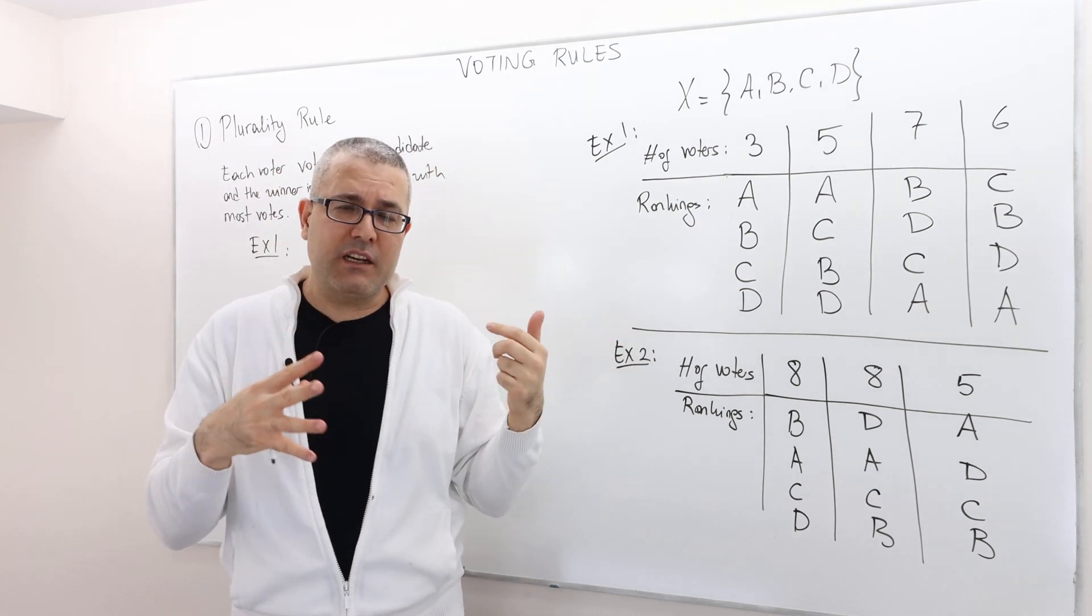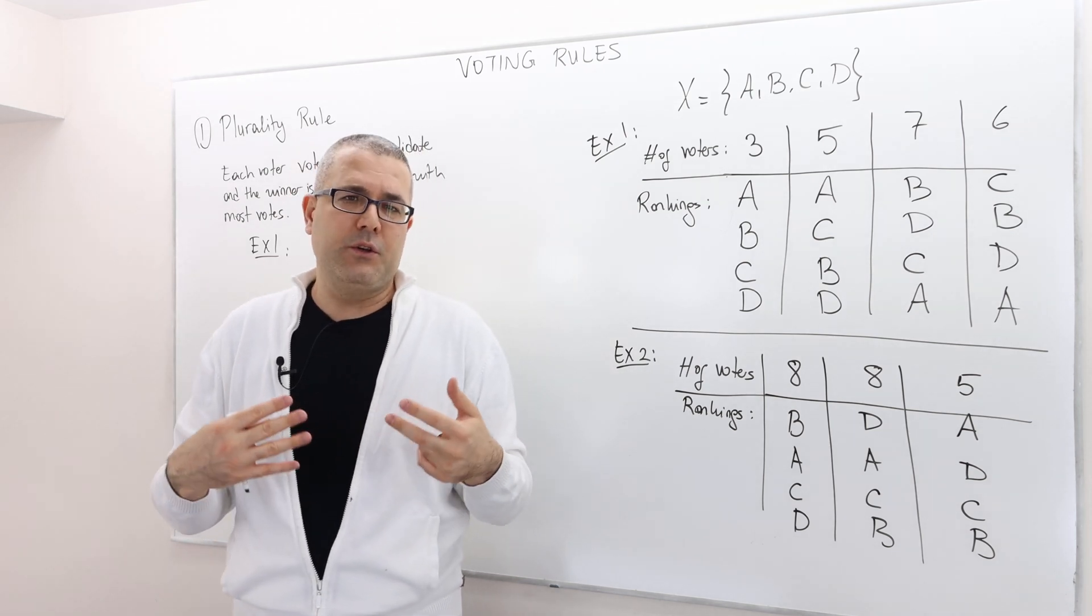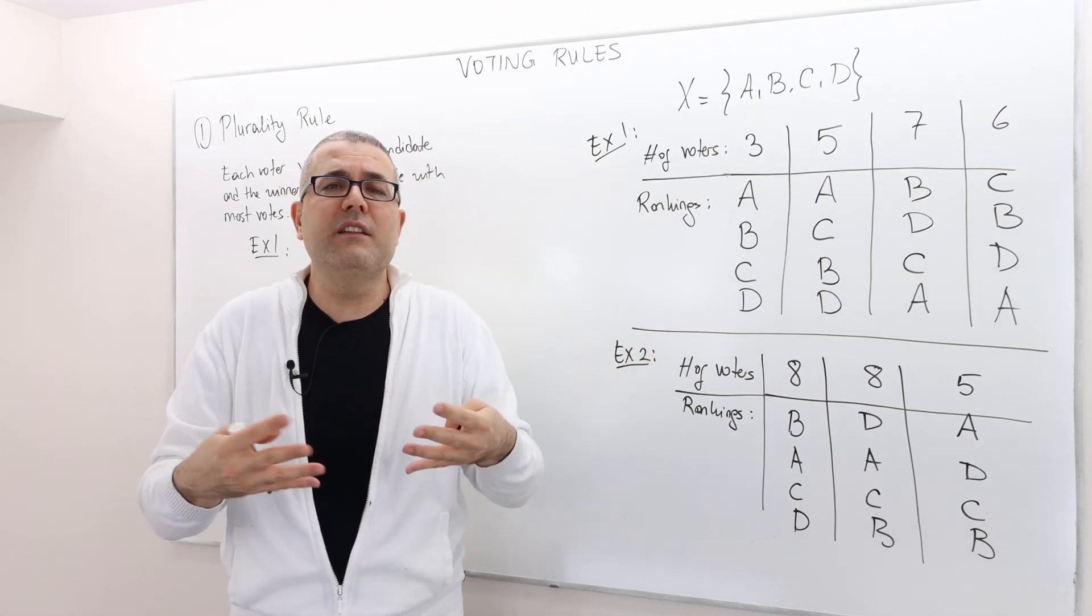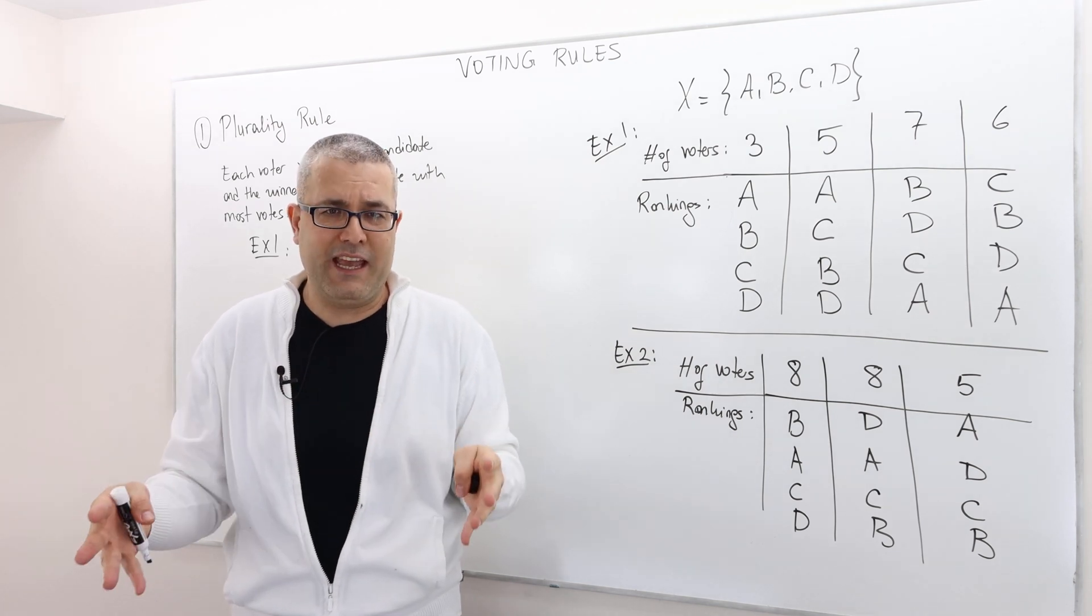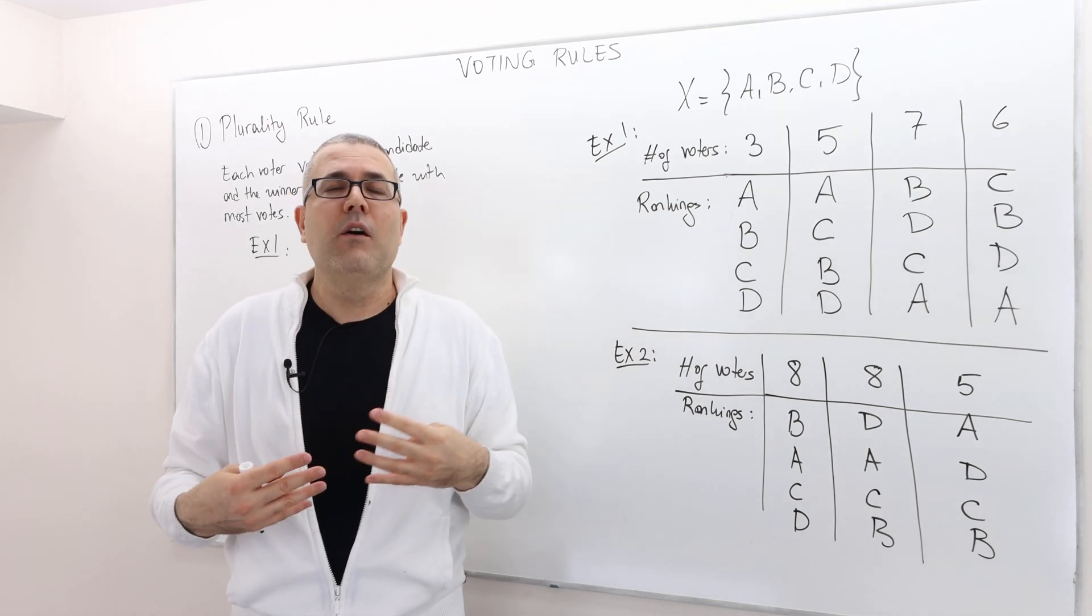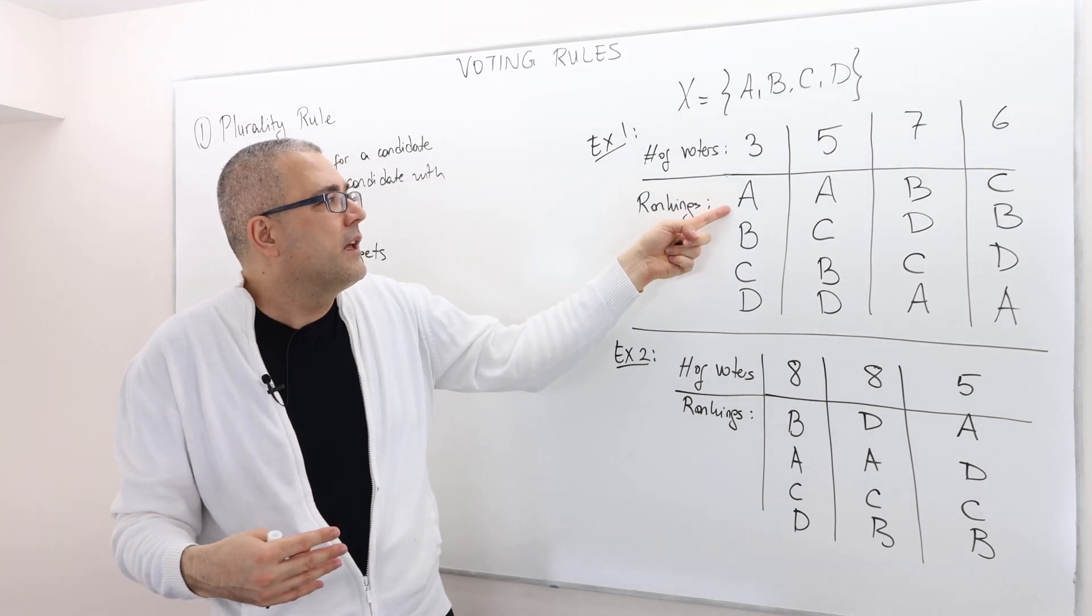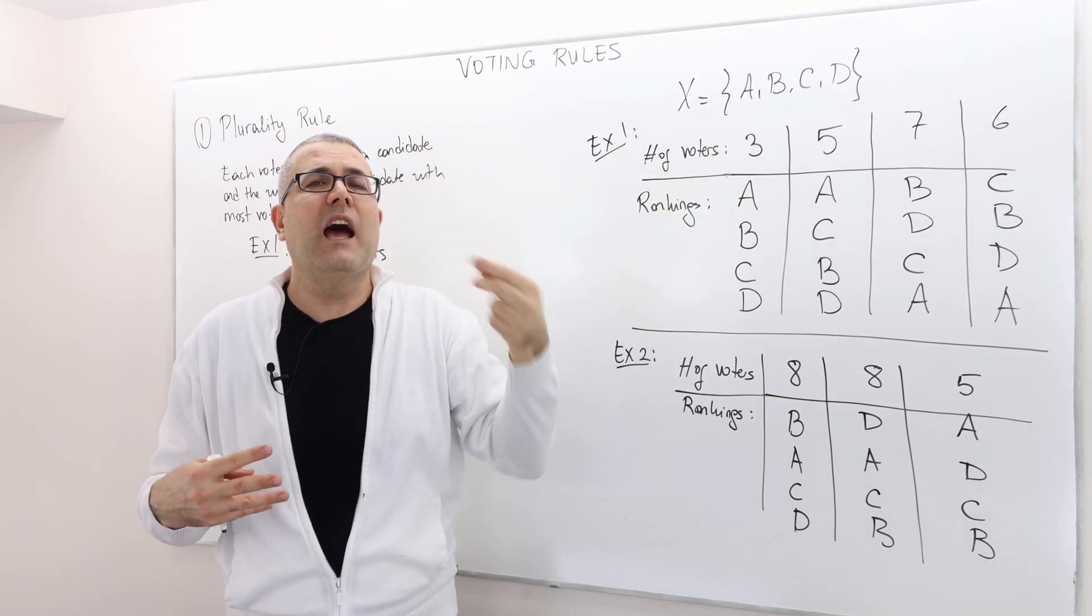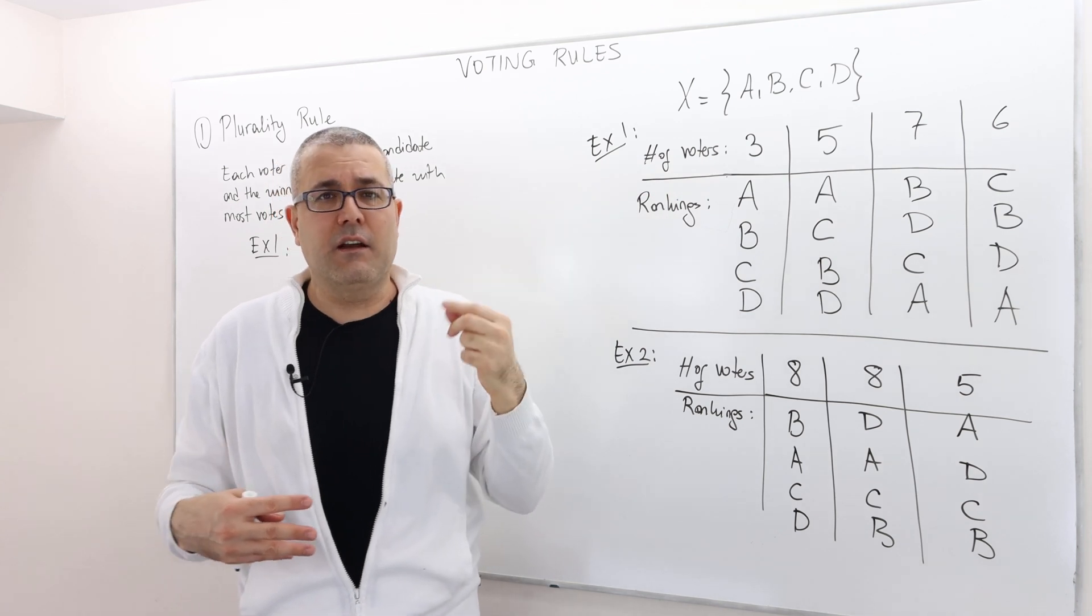But the thing is, here in our setup, we don't ask the voters to vote for a candidate, we ask the voters to reveal their entire preferences over alternatives, over the candidates, and then we tell in behalf of them, three voters actually rank A as their top choice, and so they would vote for candidate A.